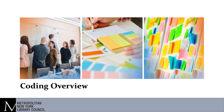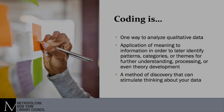First, a coding overview. I chose these images because they reflect how coding can take place whether working individually or in a group — there's an element of coding that is really about organization. Coding itself is just one way to analyze qualitative data. In technical terms, coding is the application of meaning to information in order to later identify patterns, categories, or themes for further understanding or development of theories.